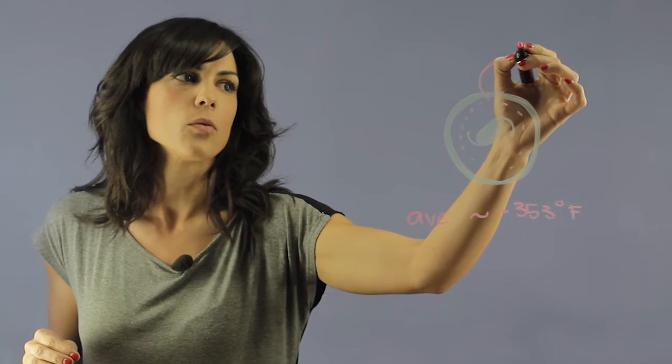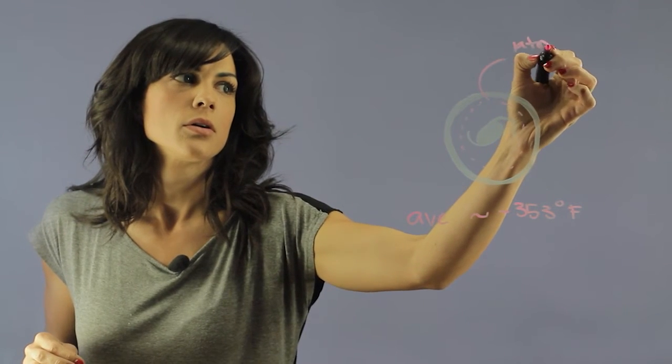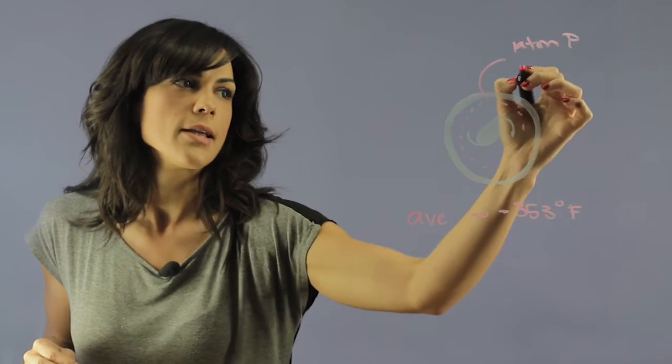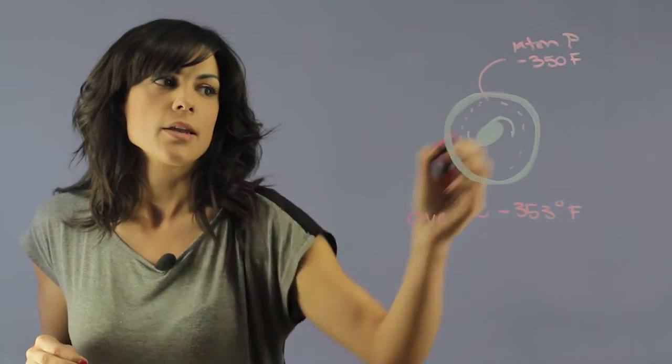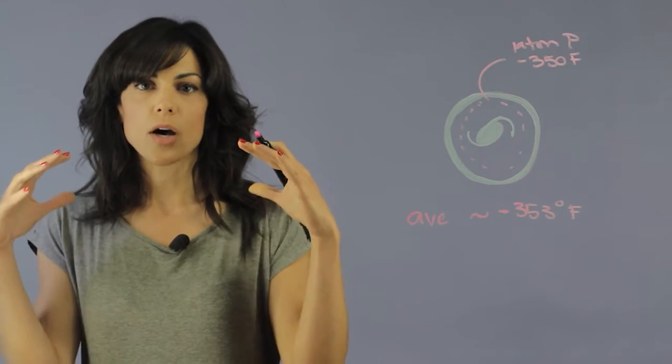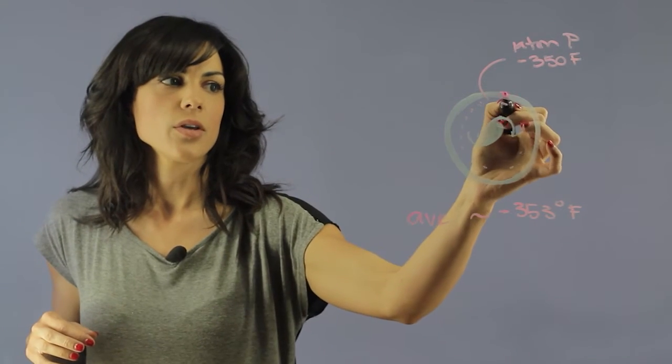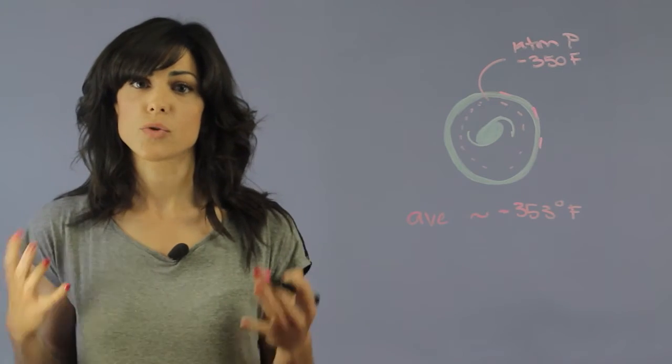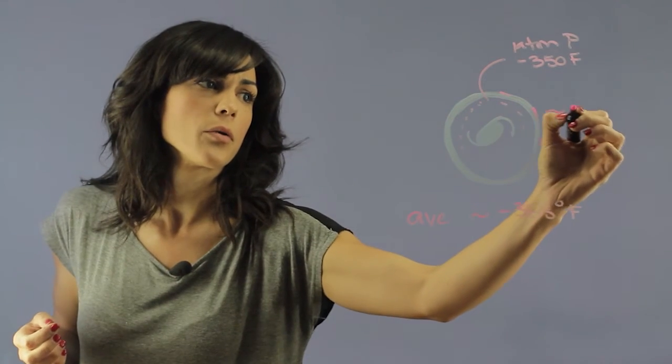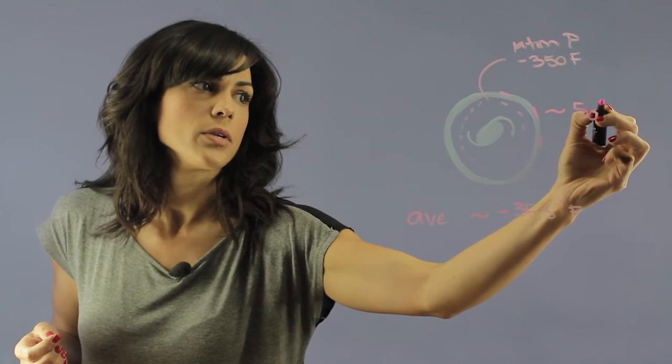So here we have the 1 atmosphere pressure, and this is about minus 350 degrees Fahrenheit. Now the change from that to the top of the clouds, so over here where you are exposed to direct sunlight, even during the summers you can get to about minus 50 degrees Fahrenheit.